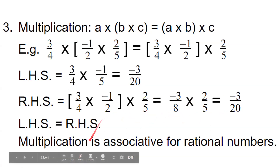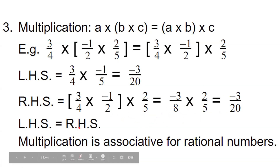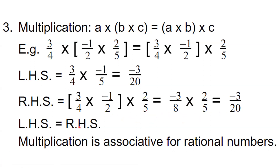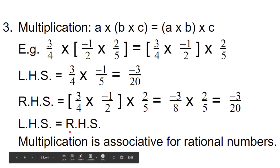Both LHS and RHS have the same value, so we can say that LHS is equal to RHS. Therefore, we can say that multiplication is associative for rational numbers. To find the product of three rational numbers, we can find the product of any two numbers in any order and then multiply, and we will get the same answer.